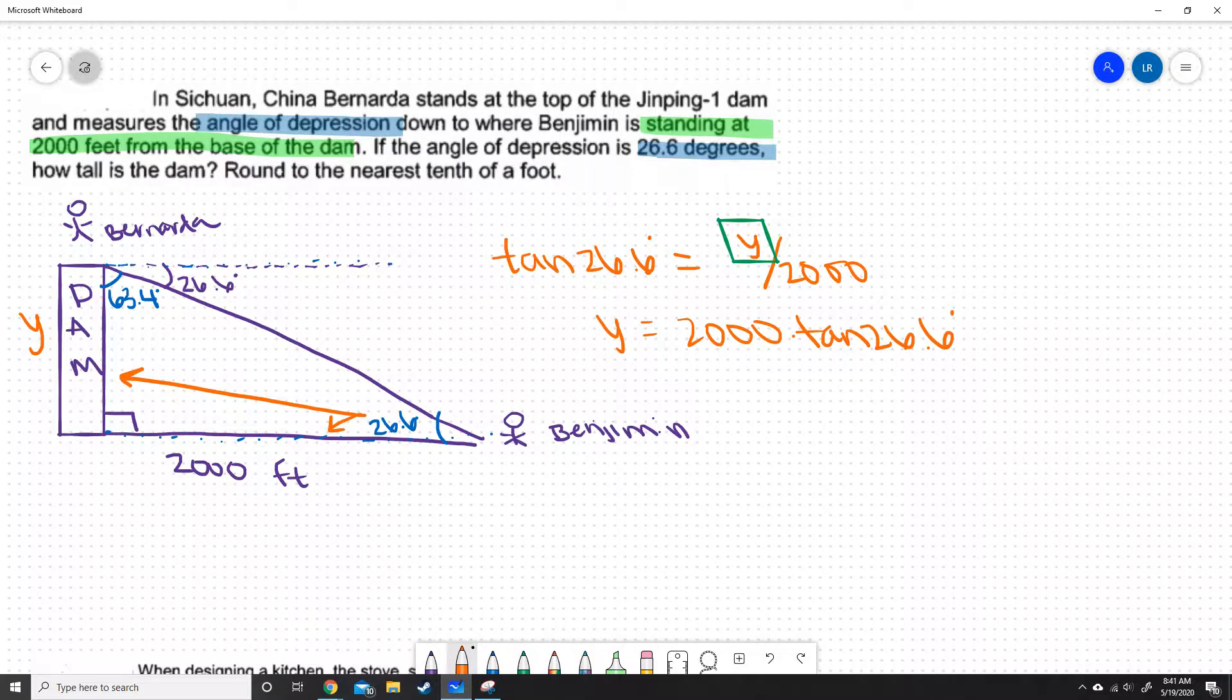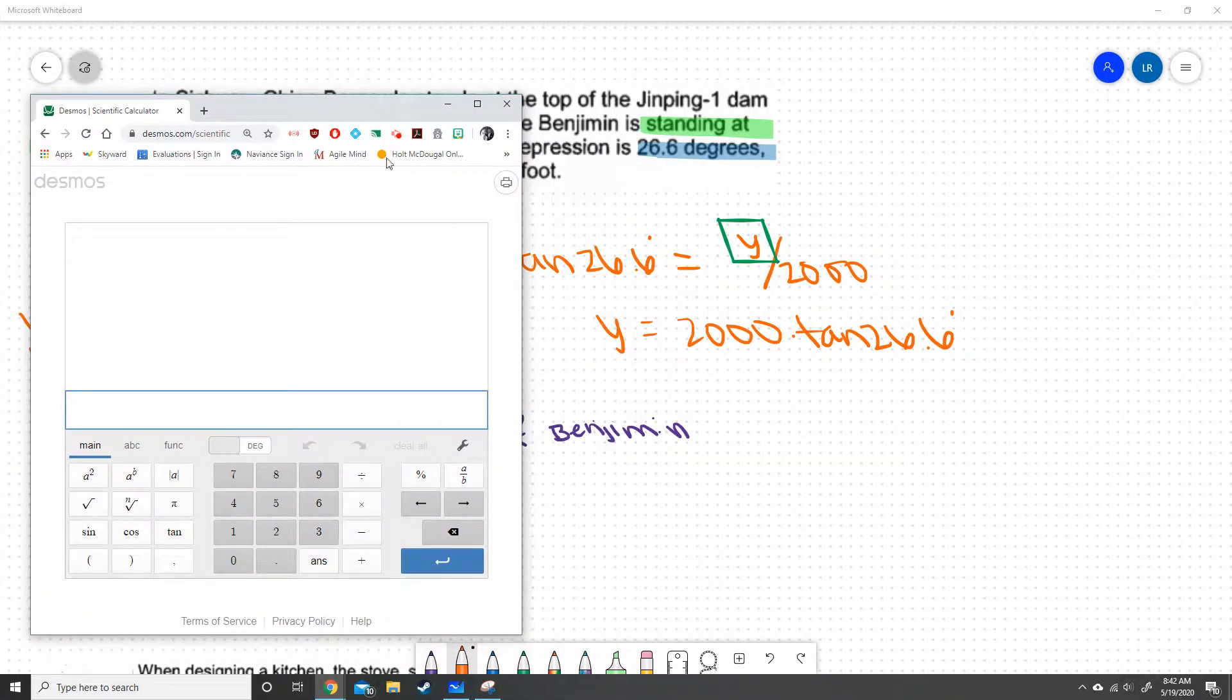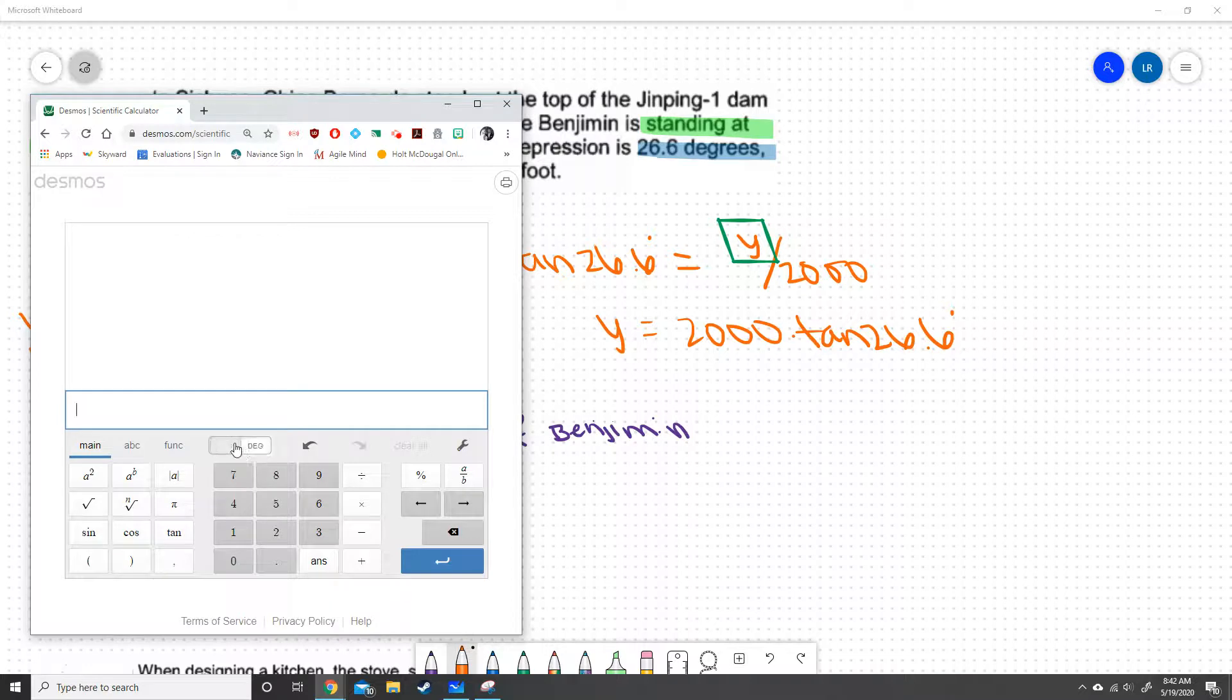We want to round to the nearest tenth of a foot. So let's go ahead and grab our calculator. Here's our calculator. We're going to want to make sure this is in degree mode, which is right here. I think, no, it's in degree mode right now.